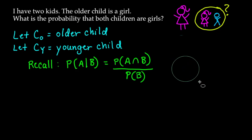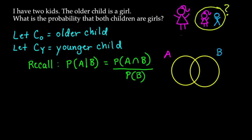Looking at the Venn diagrams on the right, the left circle is the probability of event A happening and the right circle is the probability of event B happening. We're given that event B occurs, so we're only concerned with that entire B circle, and we want to know the probability that event A occurs given that B has already occurred.